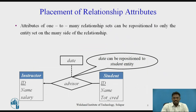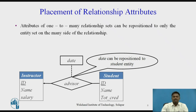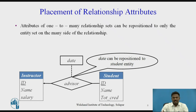Next, we will discuss placement of relationship attributes. Every entity will have some attributes as shown in the figure. Here, instructor has attributes ID, name, and salary; similarly, student has attributes ID, name, and total credits. Even relationships can have attributes — in this figure, the relationship 'advisor' has an attribute 'date', recorded to capture when a particular instructor became an advisor for a particular student. As a database schema designer, I need to think carefully about whether it is necessary to add an attribute to the relationship set, because adding more attributes to the relationship set makes things more complicated.